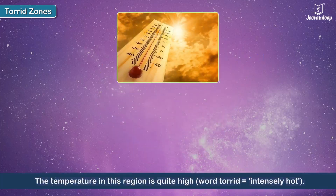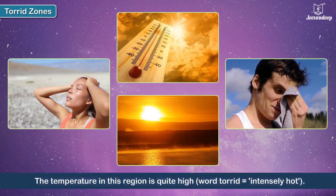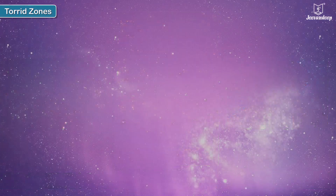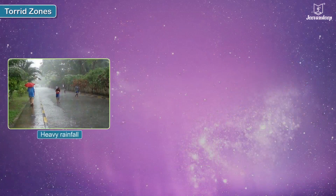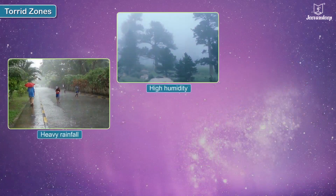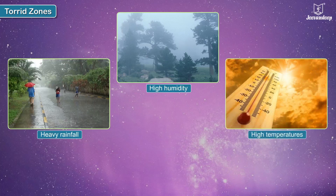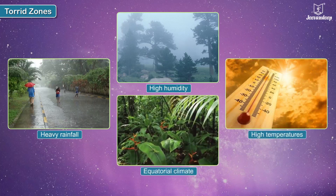The temperature in the Torrid Zone is quite high — that is why it is called the Torrid Zone. The word 'torrid' means intensely hot. The region experiences heavy rainfall, high humidity, and high temperatures, characterizing an equatorial type of climate.